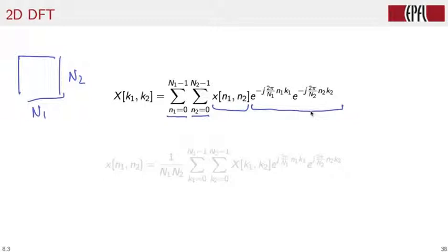times the product of two complex exponentials, whose frequencies are 2 pi over big N1, N1, K1, and 2 pi over big N2, N2, K2. The product of this two-complex exponentials represents a basis function for the space of images of size N1 times N2.